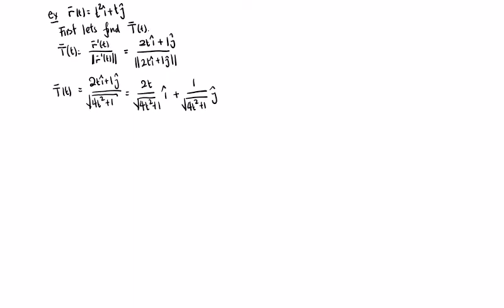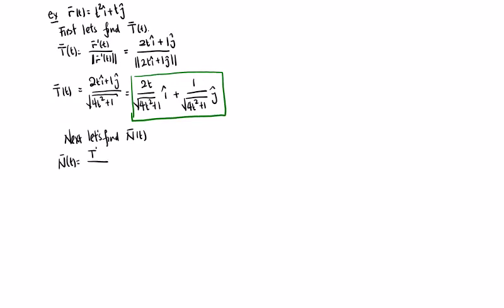So the tangent vector T(t) = (2ti + j) / √(4t² + 1). That's boxed up — the tangent vector is usually not so bad. For N, we need to do this process again. We need the derivative of T, and N(t) = T'(t)/|T'(t)|.